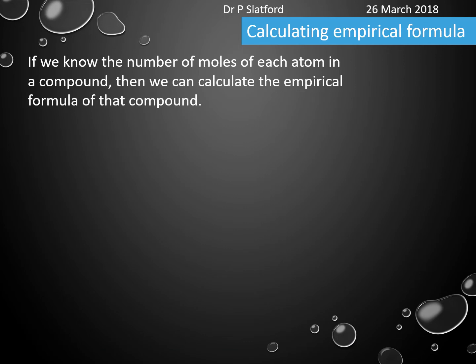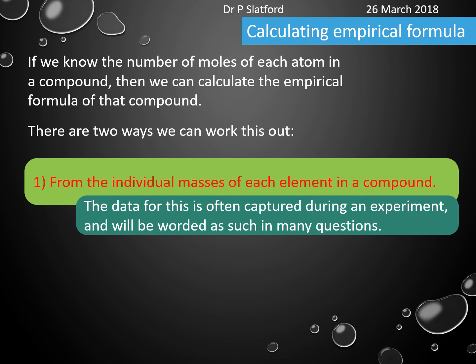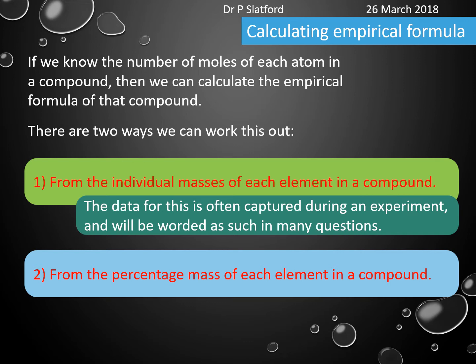We are going to need to know how to calculate empirical formula, and there are two ways of doing this. The first way is if you are given the individual masses of each element in a compound — we will usually be able to work this out from some sort of experiment. Most questions will involve the description of an experiment with values you'll need in your calculation. The second way is from the percentage mass of each element in a compound, which you would be given in a question.